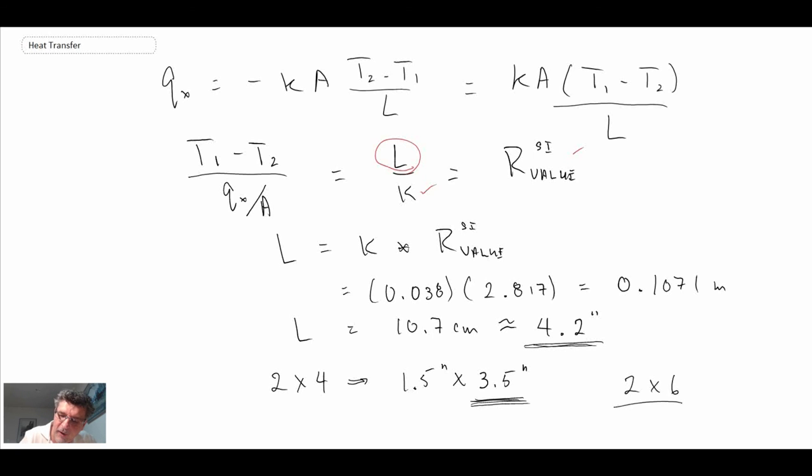So R-16 would be someplace between a 2x4 and maybe a 2x6 wall construction provided that this value of thermal conductivity is correct for fiberglass pink. So for R-16 it probably could be 2x4 or it could be 2x6 construction walls. Chances are it would probably be more towards a 2x4, so when you see R-16 that means that it's probably 2x4 construction.